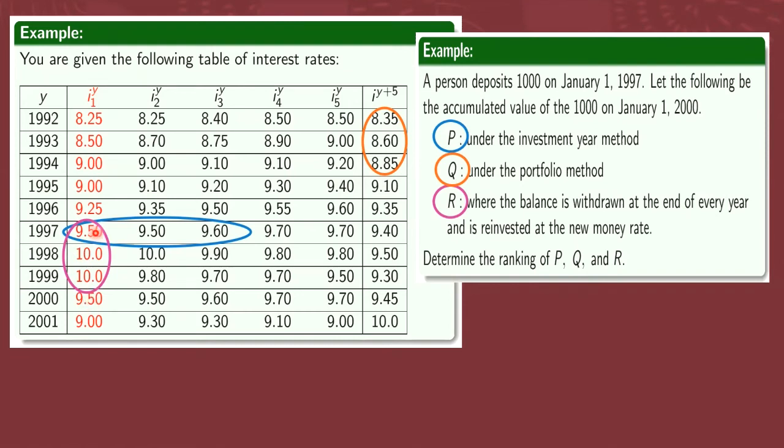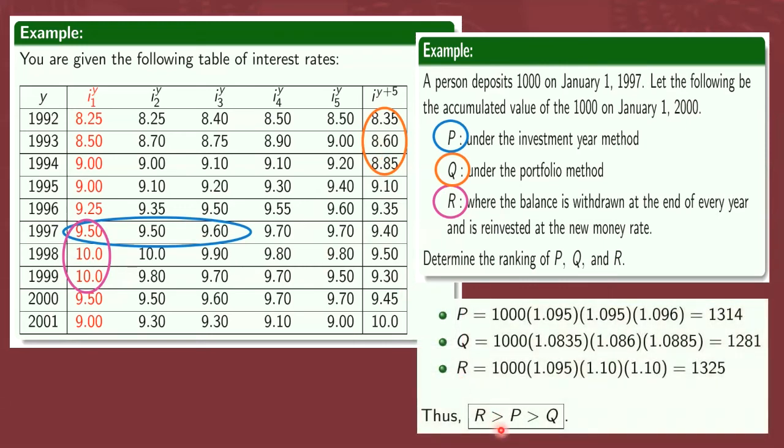Again, hindi lang ito yung mga methods available. Actually, pwede, after 2 years, saka, i-withdraw and then i-reinvest at the new money rate. Pwede rin yun. Actually, you don't really have to find the accumulated value. Kasi ang question lang naman dito, determine the ranking of P, Q, and R. Without computing the values, you can easily determine which method will give us the biggest accumulated value. Alin dyan? E di ito, yung naka-color pink. Kasi siya yung may pinaka-mataas na interest rates. So, si R yung pinaka-malaki. Followed by itong blue. Ang pinaka-maliit, itong nasa orange. Yeah? So, that's why this is our final answer. So, kinumpit ko na rin para makita ninyo.